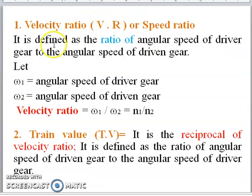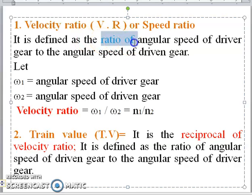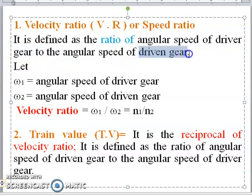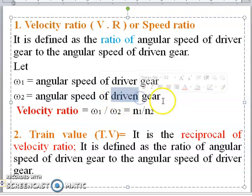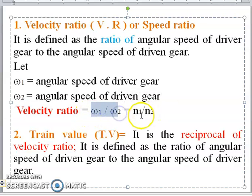First, we will go with velocity ratio. The velocity ratio is also called the speed ratio. It is defined as the ratio of angular speed of the driver gear to the angular speed of the driven gear. Let omega 1 be the angular speed of the driver gear and omega 2 be the angular speed of the driven gear.